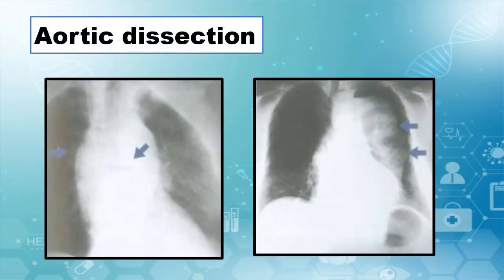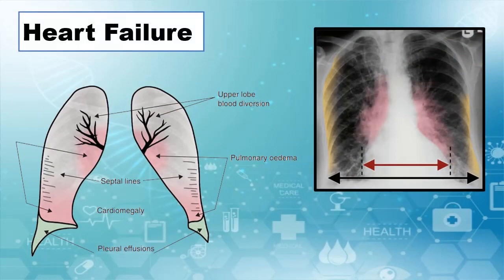A dissection of the ascending aorta will make the silhouette protrude to the right, and a dissection of the descending aorta to the left. Four keys are characteristic of heart failure and can be used to discern it from pulmonary hypertension of another cause: first, pulmonary edema; second, bilateral pleural effusions; third, septal lines, also called Kerley B lines; and fourth, cardiomegaly.